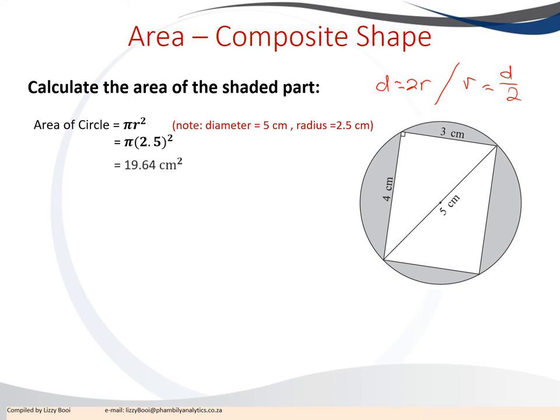Once we've substituted, use the π button on the calculator. If you're using a financial calculator, press second function to find where the π sign is written in orange. The area of the circle is 19.64 centimeters squared.